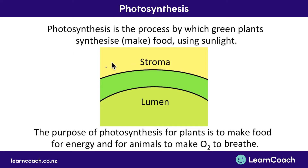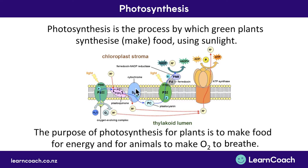Now let's zoom in on one of those thylakoid disks inside a chloroplast. The stroma is outside the thylakoid and the lumen is inside it. This is where photosynthesis happens. In this more complex diagram of the membrane, all you need to know is: water comes in at the start, light is needed throughout, and at the end you've made ATP, which is energy. These enzymes help the process, but the take-home message is: light and water come in, ATP comes out.